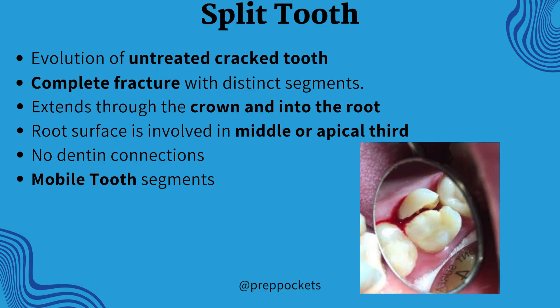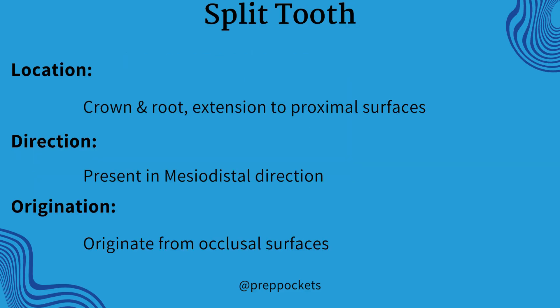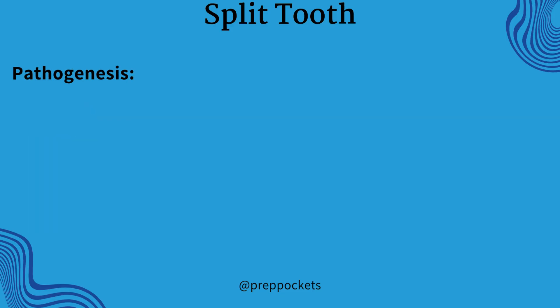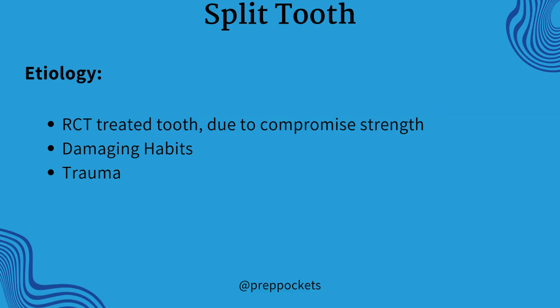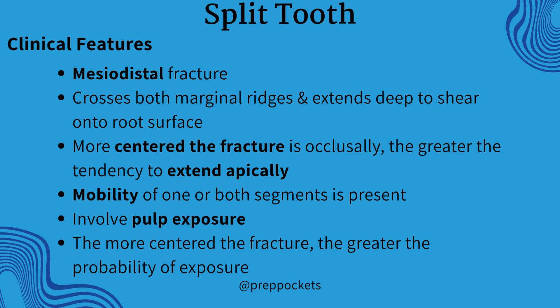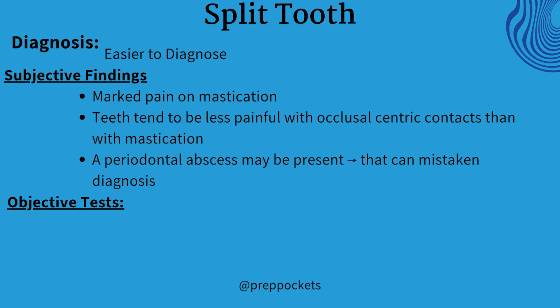The next type is the split tooth, which occurs if the cracked tooth is left untreated. It is a complete fracture of the crown with distinct margins, extending from the crown into the middle or apical third of the root, showing mobile tooth segments. It originates from occlusal surfaces in the mesiodistal direction. It happens due to destructive wedging or displacing forces on existing restorations, traumatic forces exceeding the elastic limit of dentine, compromised strength of RCT-treated teeth, damaging habits, and trauma. Clinical features include a mesiodistal fracture involving both marginal ridges, extending deep onto the root surface. These are easier to diagnose; the patient will complain of pain on mastication.